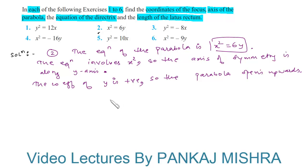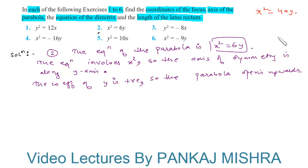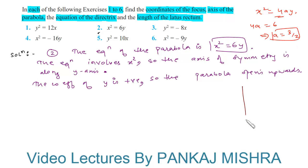The general form of the equation of a parabola which is symmetric along the y-axis and opens upwards is given by x² = 4ay. On comparing this with the given equation, we see that 4a = 6, which implies a = 3/2.